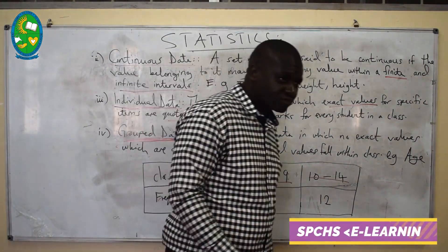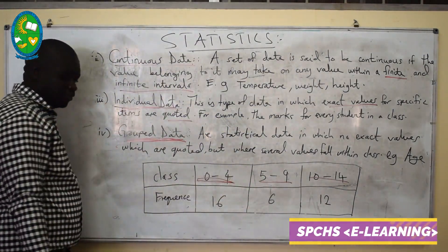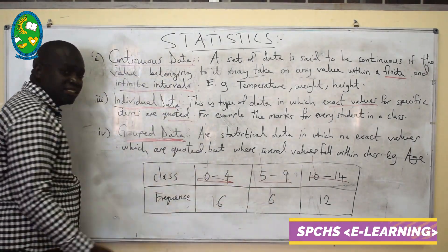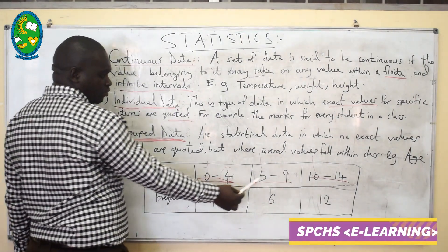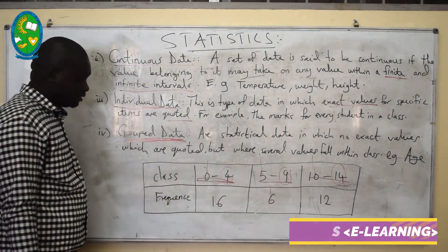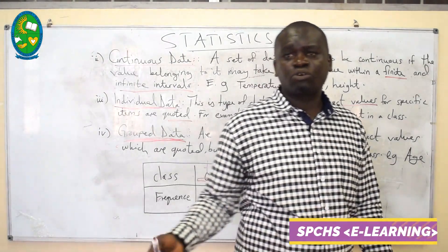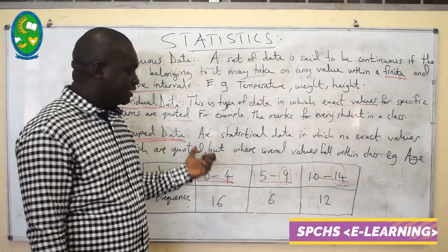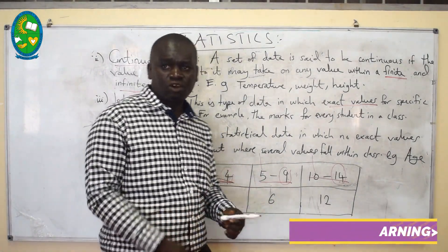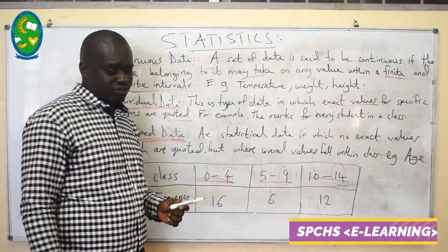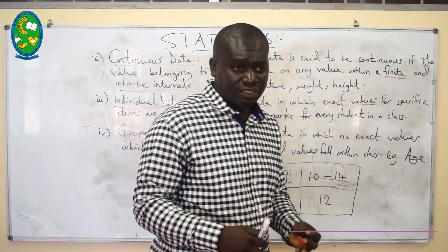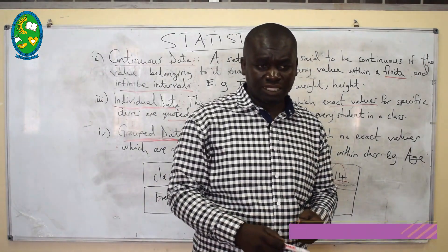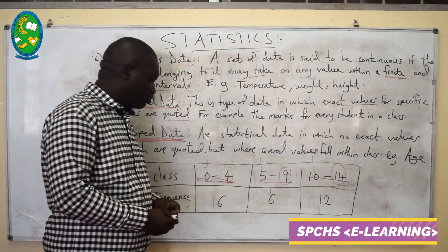In grouped data, there are different terms used. When we take 0, 5, and 10 — these are called the lower limit. When we take 4, 9, and 14 — these are called the upper limit. We also have the lower class boundary, which accounts for errors when collecting data. The lower class boundary is obtained by subtracting 0.5 from the lower limit. The upper class boundary is the upper limit after adding 0.5 to the data.